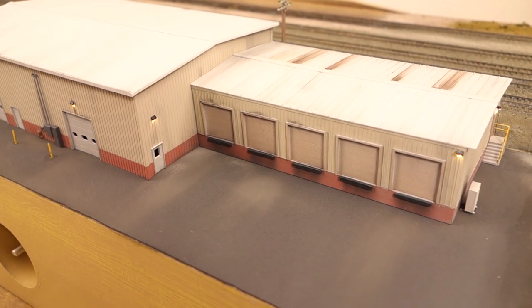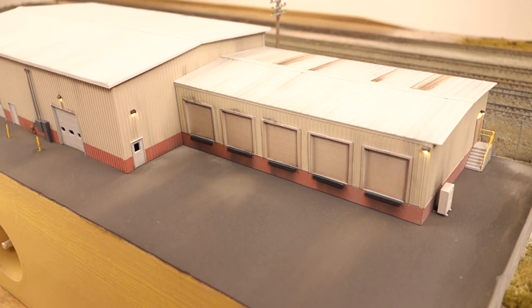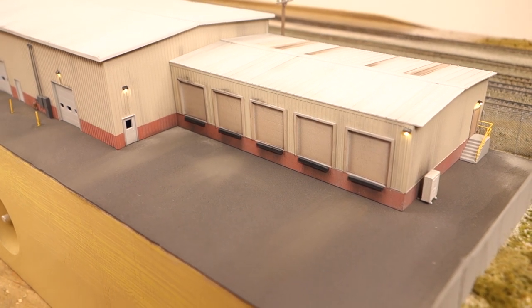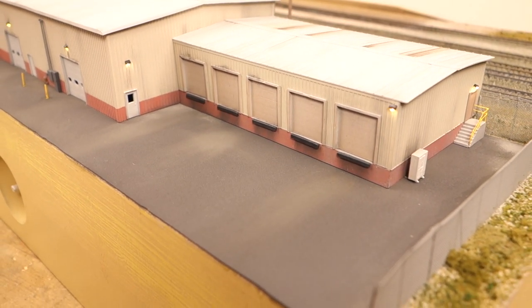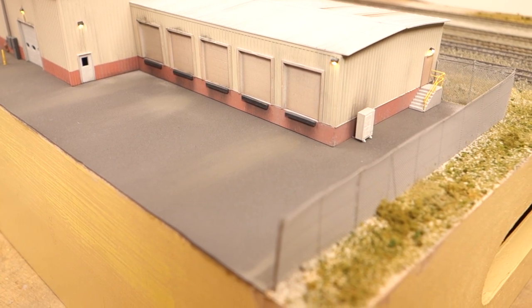I started building the structures for the olive street module after this one and I built those with straight styrene strips at the top and bottom of the side walls and that worked a lot better.